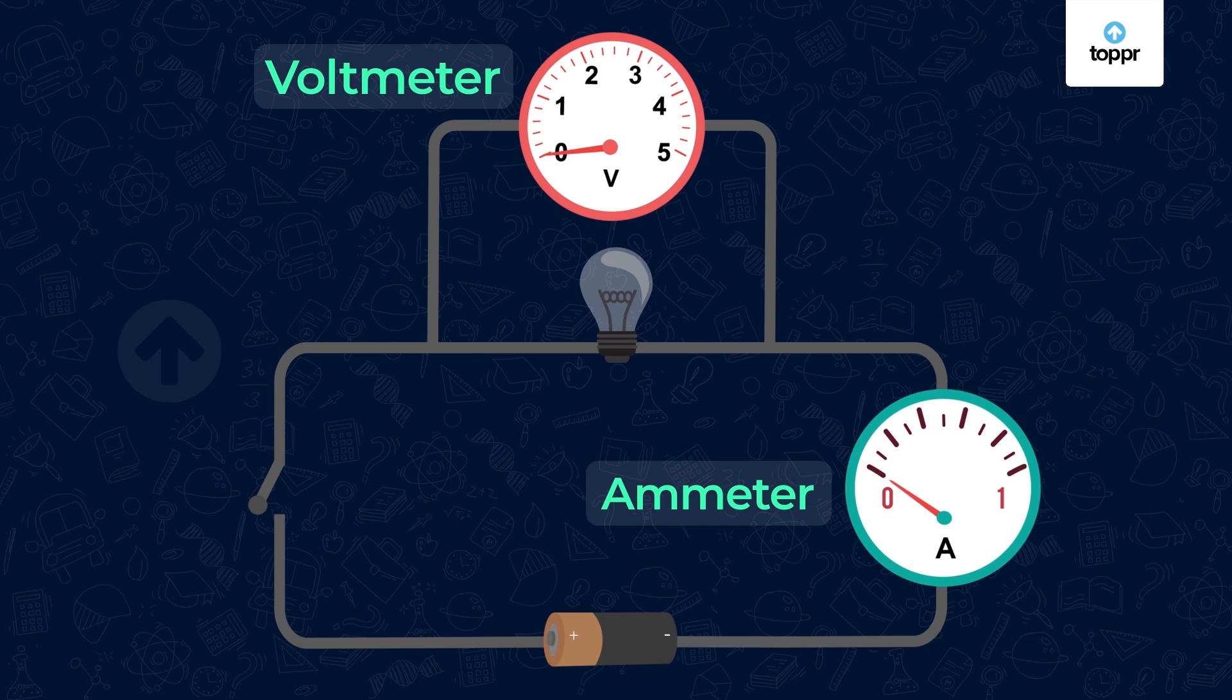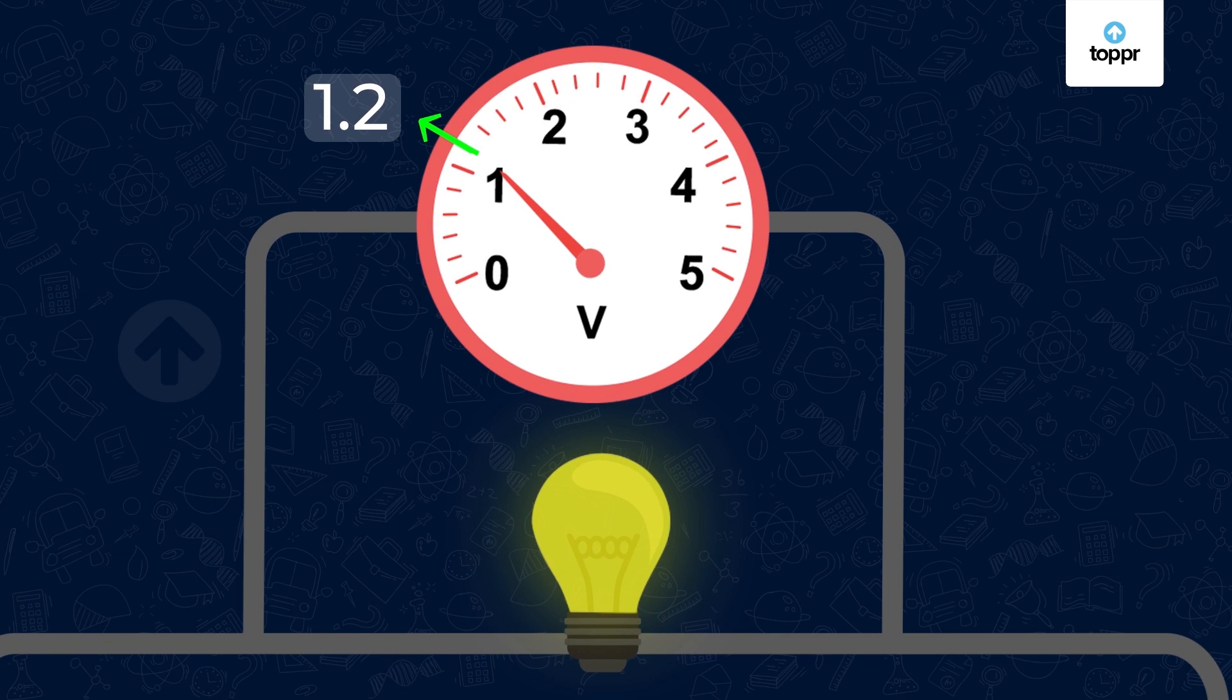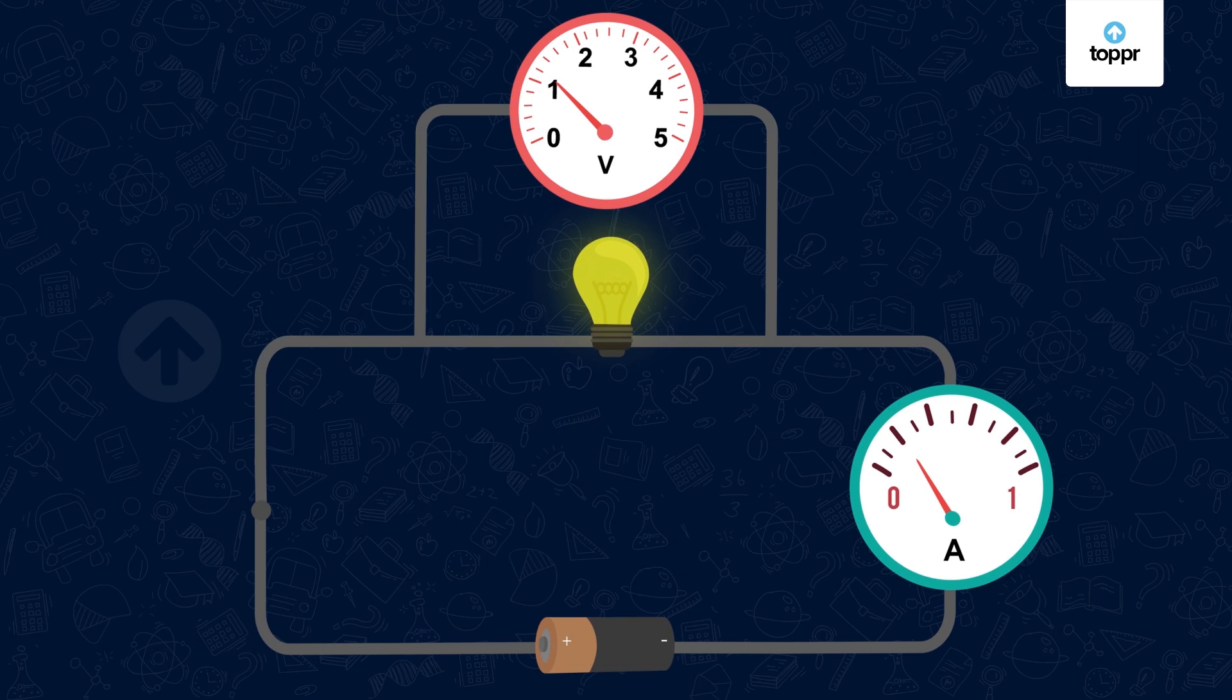First, we'll use only one cell as power supply and switch on the circuit. What is the reading shown in the voltmeter now? It shows 1.2. So, the potential difference across the bulb is 1.2 volts. What about the ammeter? It reads 0.2, so the current in the circuit is 0.2 ampere.